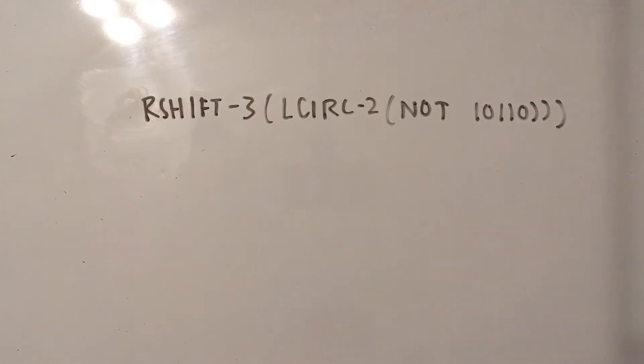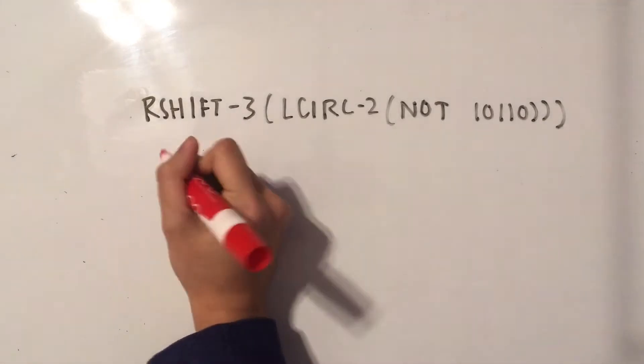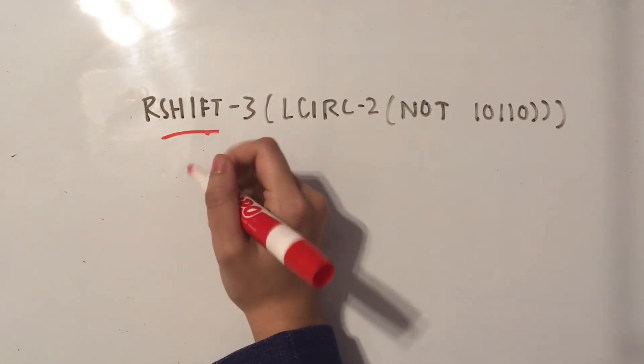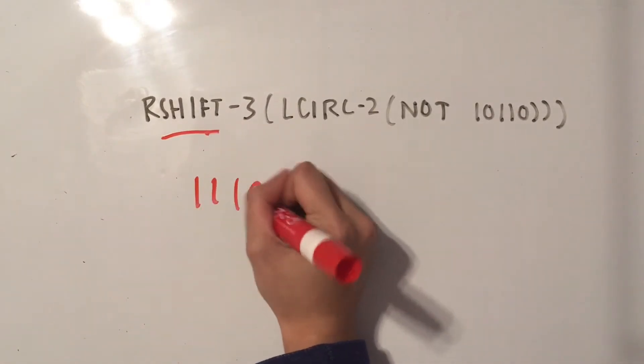So all we need to do is evaluate this expression. Whenever we see a shift, we take that number, so let's say 11101.